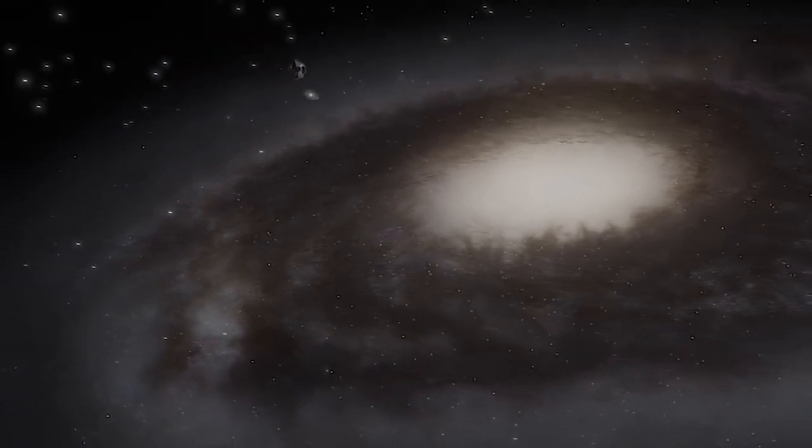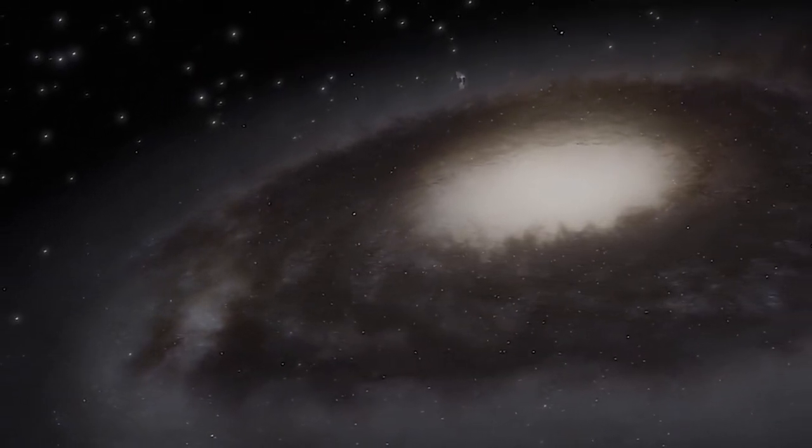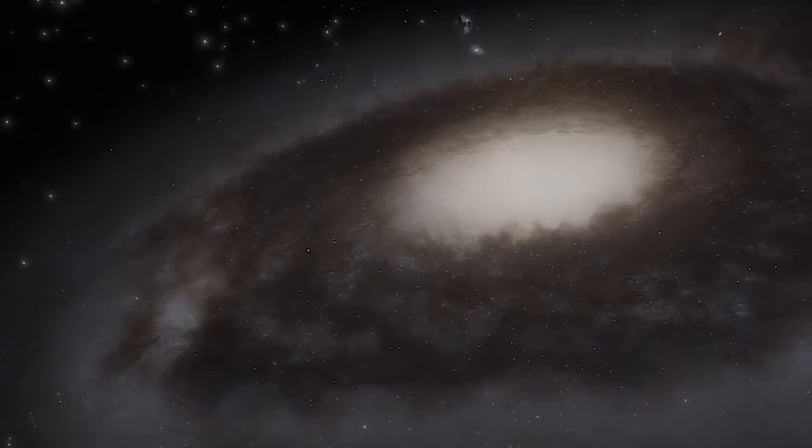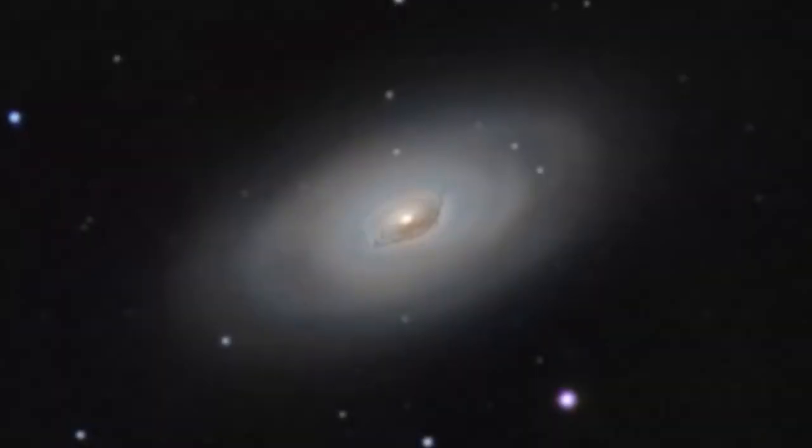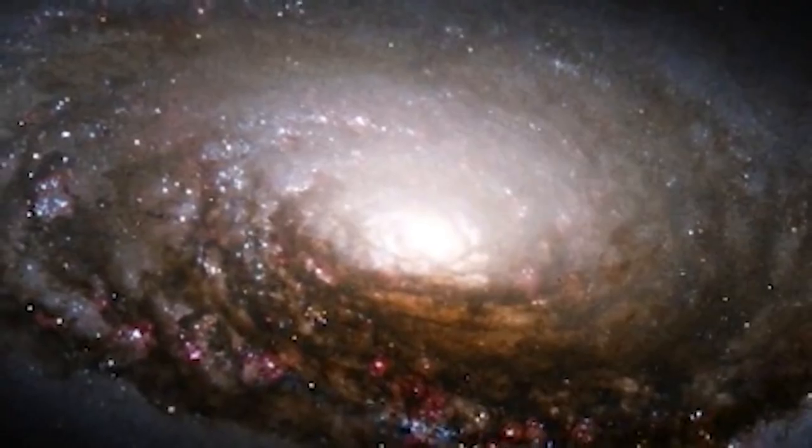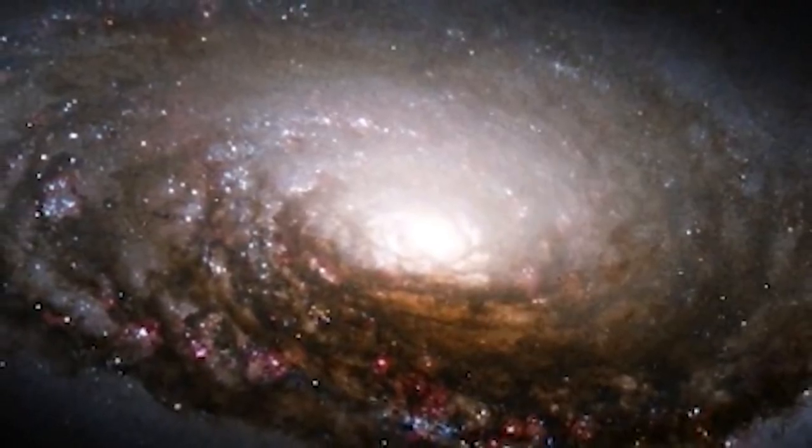M64 has an estimated mass similar to that of our Milky Way galaxy and spans about 40,000 light years in diameter. It is classified as a Type II spiral galaxy, indicating the presence of a central bar-like structure extending across its nucleus.